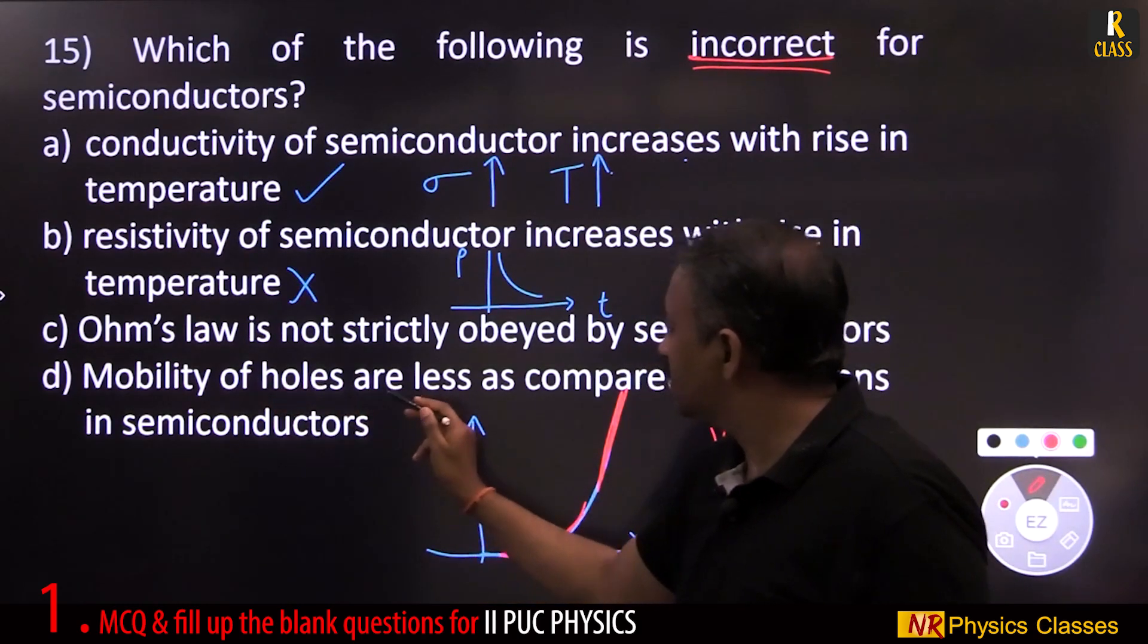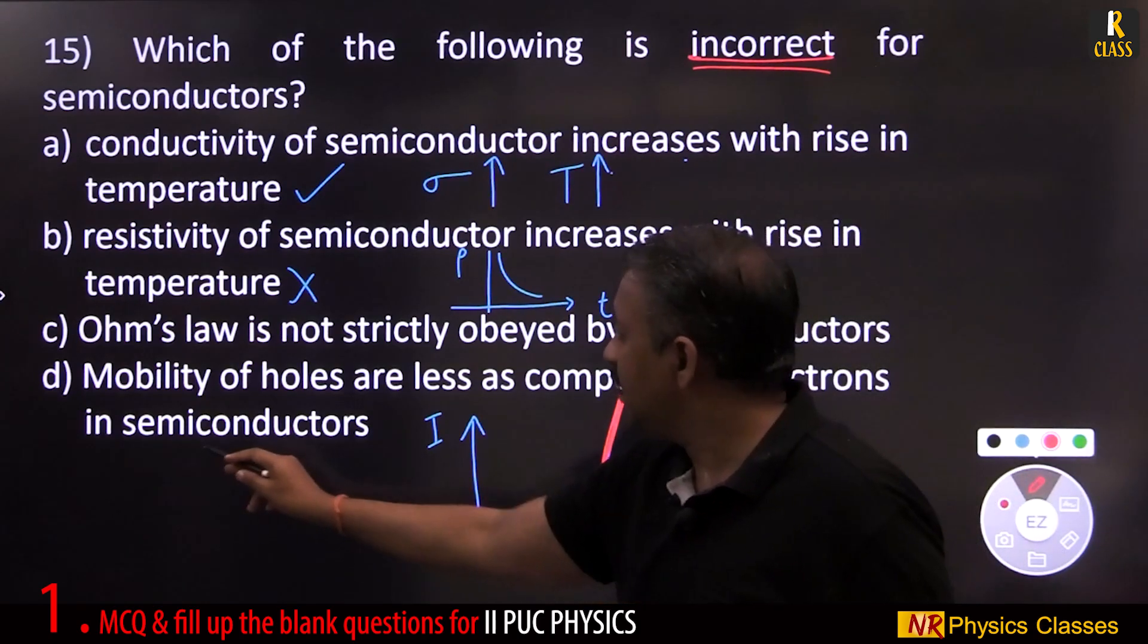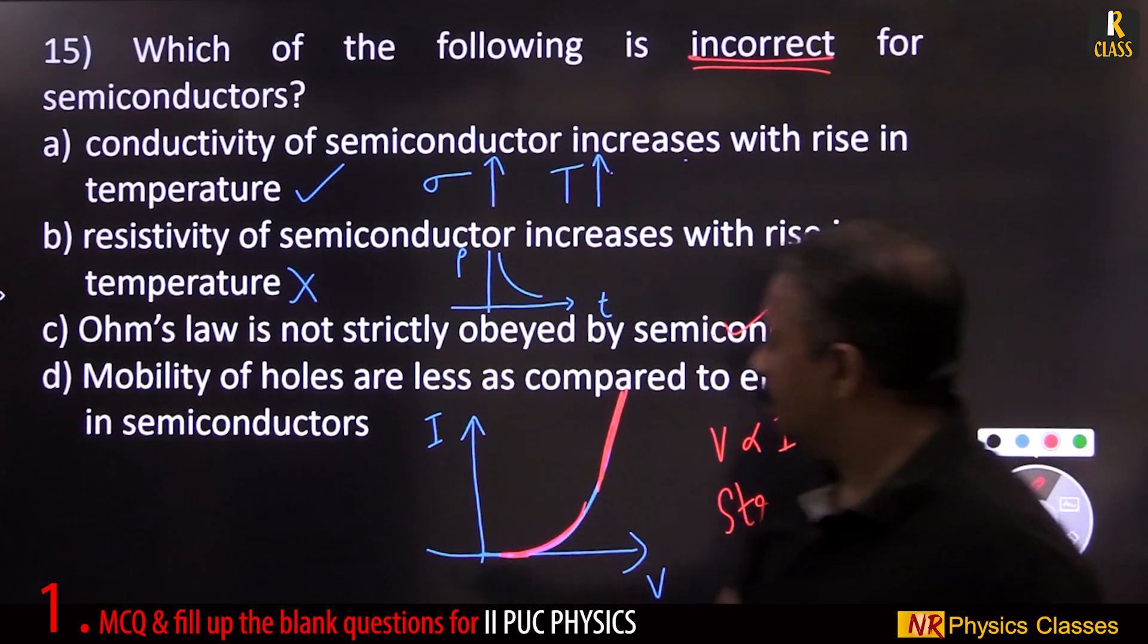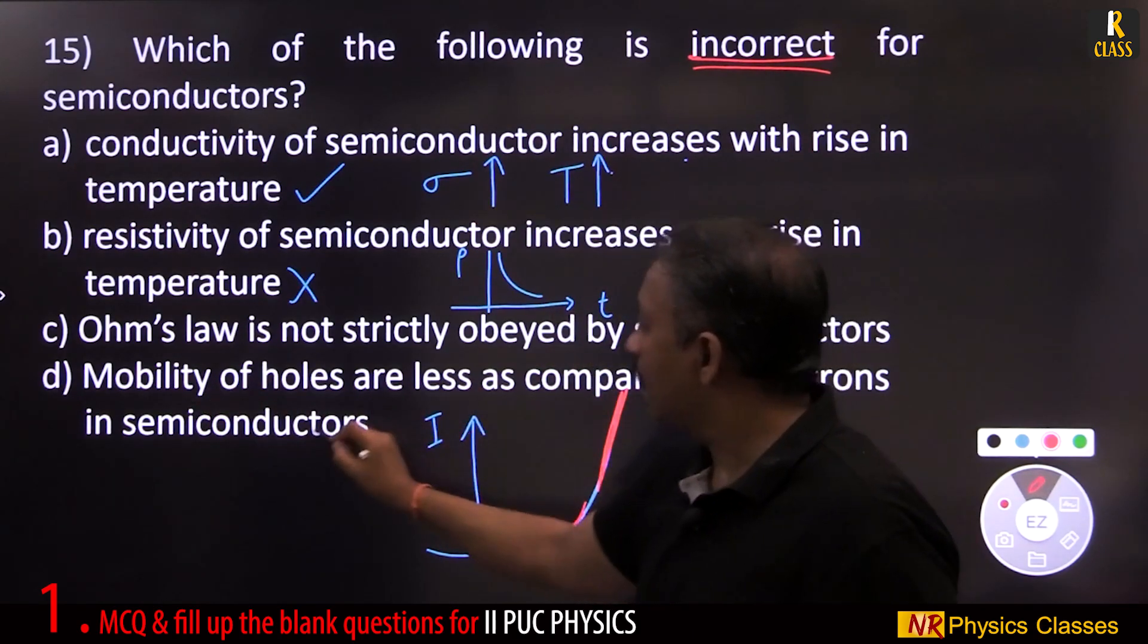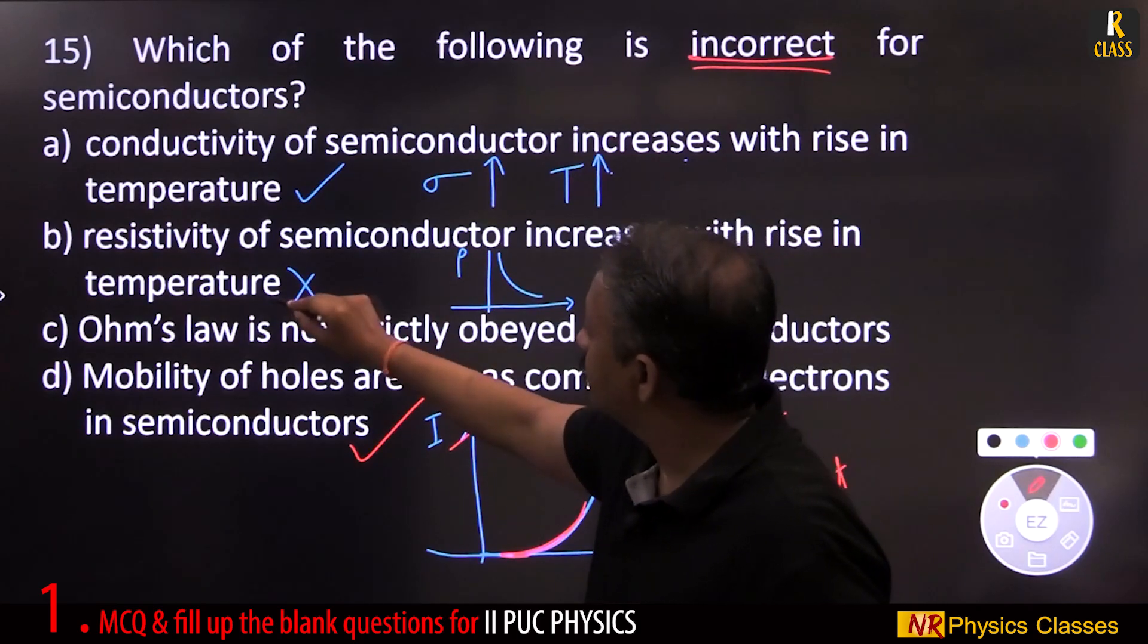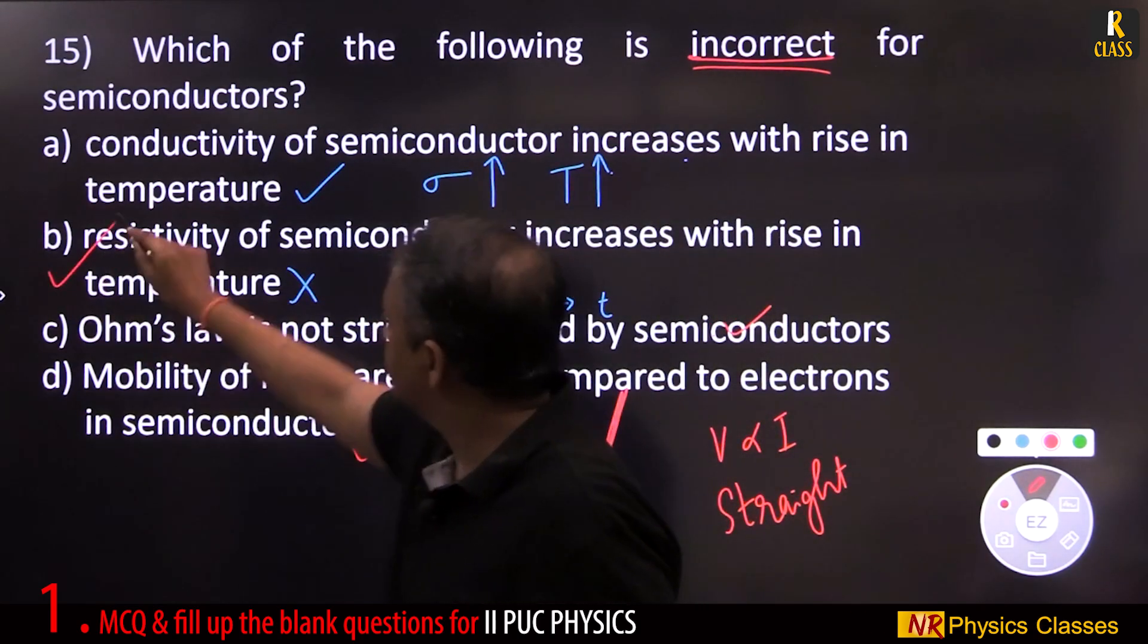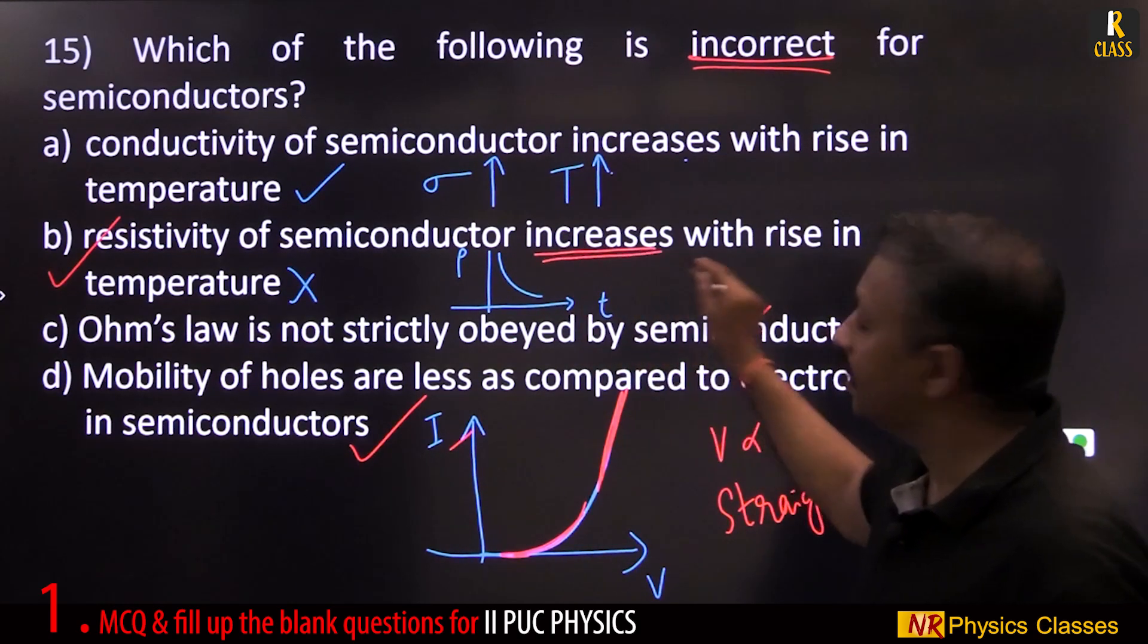This is current voltage. Ohm's law means V proportional to I. This gives a straight line. Straight line is observed only here. So here you cannot apply Ohm's law. Only in this region you can apply Ohm's law. Ohm's law is not strictly obeyed by semiconductors. So B is incorrect. Mobility of holes are less as compared to electrons in semiconductors. Yes, this statement is correct. So here is the wrong statement. B is the answer. Resistivity of semiconductor decreases. Here it is mentioned increases.